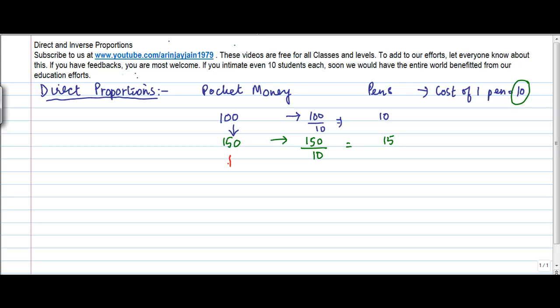Okay, let's assume the situation got even better. I have 200 rupees. So, how many pens can I buy? 200 divided by 10 is equal to 20.